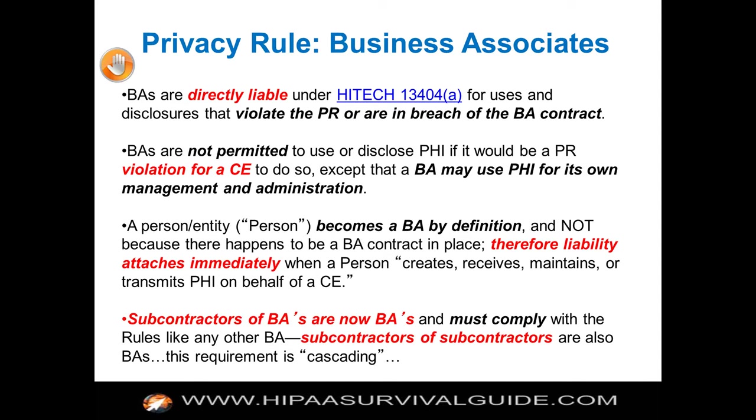You're on the hook for failure to disclose PHI to the secretary, for failure to provide an accounting of disclosures, and for failure to comply with the requirements of the security rule. Basically, you're on the hook for those three rules. The bottom line is, with respect to BAs and CEs, we're not in Kansas anymore — the world has changed and we're never going back.